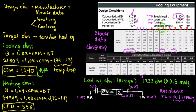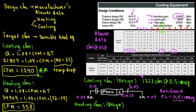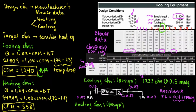Now for the heating design CFM: the manufacturer provides separate blower data for heating and for cooling. It's better to say 'heating' rather than 'heat' because 'heat' is more generic — when doing a heat load calculation, we talk about both cooling load and heating load together. The design heating CFM is selected from the manufacturer's blower data at 0.5 inches of static pressure.